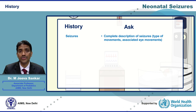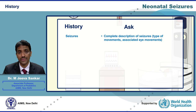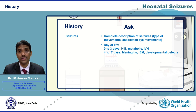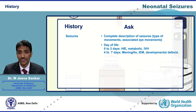In history, we should ask for a complete description of the seizure episode, particularly the type of movements and any associated eye movements. This helps in differentiating seizures from mimics like jitteriness. The exact age at onset of seizures helps narrow down the possible etiology. For example, a seizure in the first three days of life is likely caused by hypoxic ischemic encephalopathy or hypoglycemia, while a seizure after three days is likely meningitis.